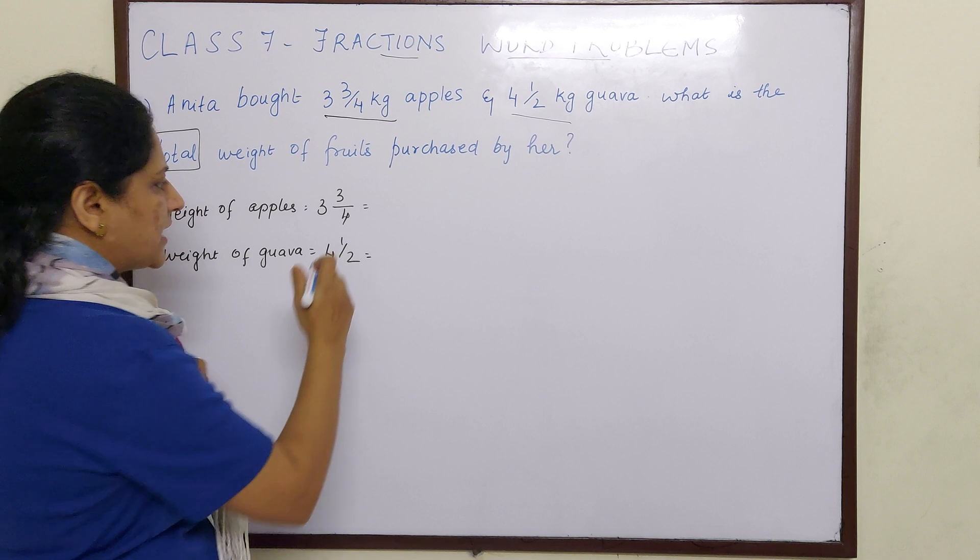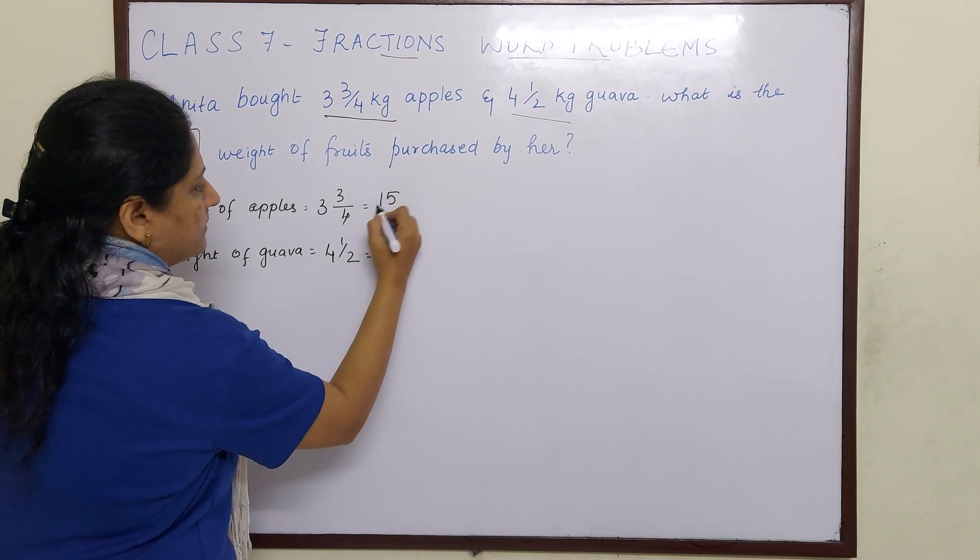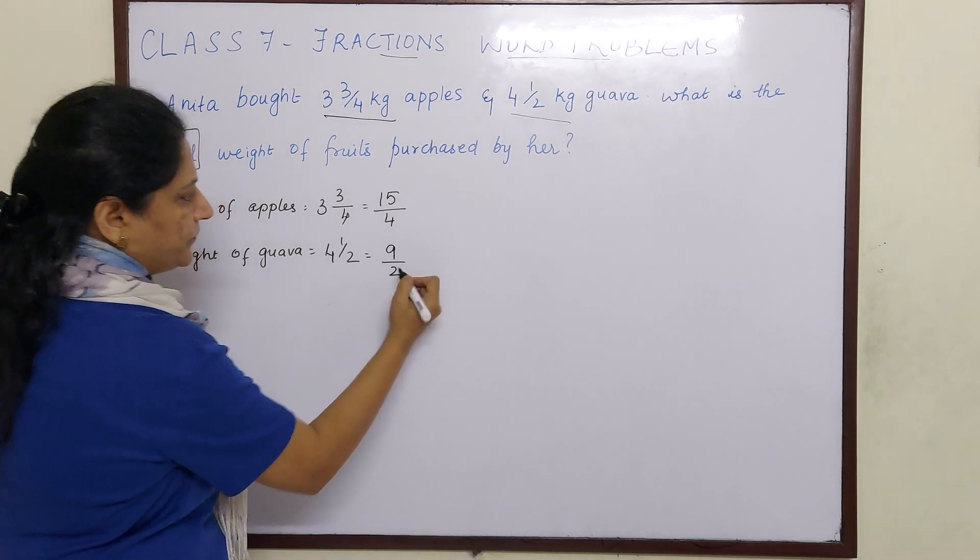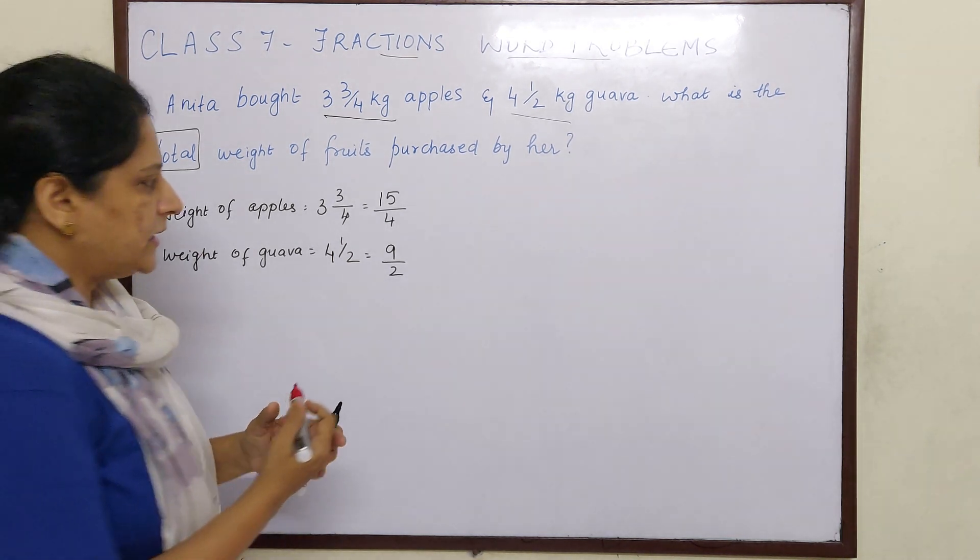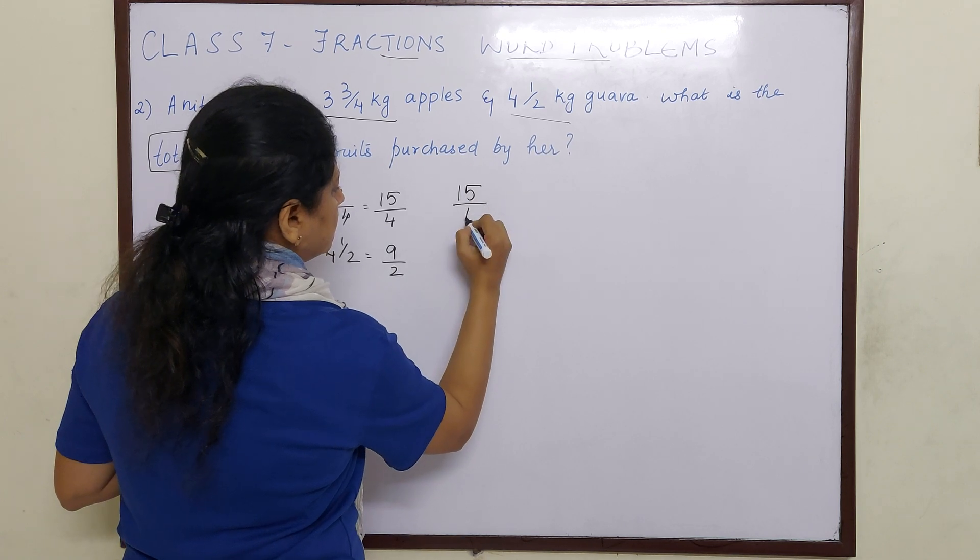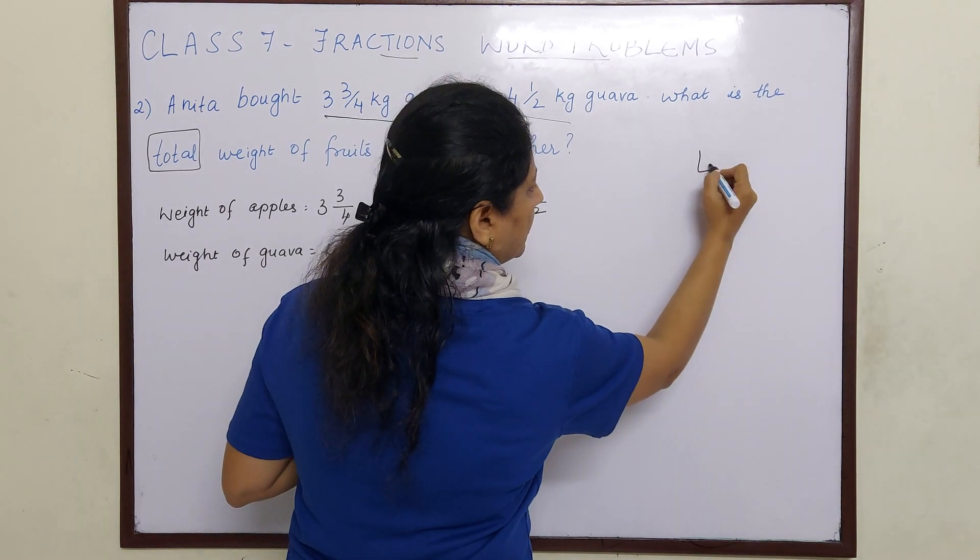So we have to add these two to find out the total weight of the fruits. First let us convert this into improper fraction. 4 times 3 is 12, 12 plus 3 is 15/4. 2 times 4 is 8, 8 plus 1 is 9/2. Now here when you add, we have faced with unlike denominators. So first we will make it into like denominators. For that we have to take LCM.